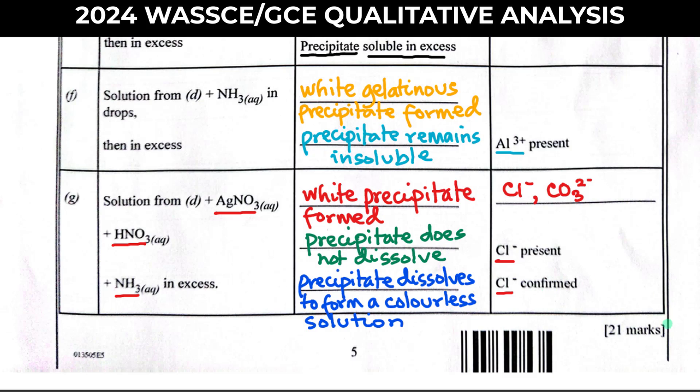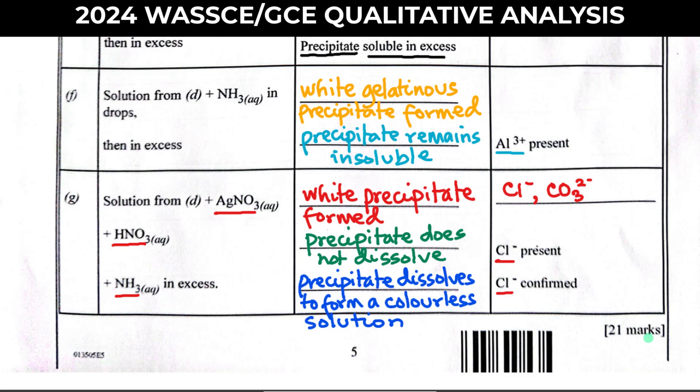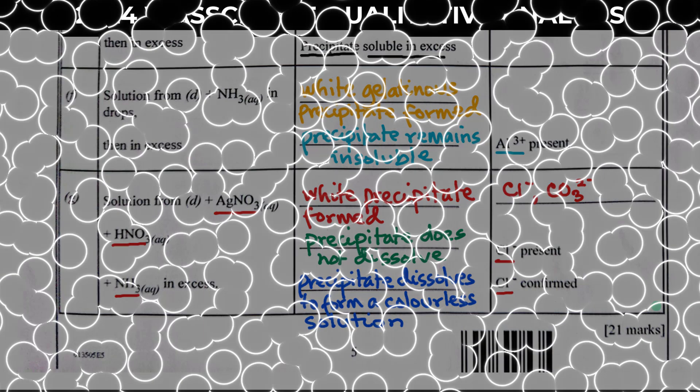That brings us to the end of the qualitative analysis question, worth 31 marks. If you learned anything from this video, hit the like button, subscribe to the channel, and turn on your notification bell. Feel free to share or recommend the video to your friends also preparing to write WASCE GCE.